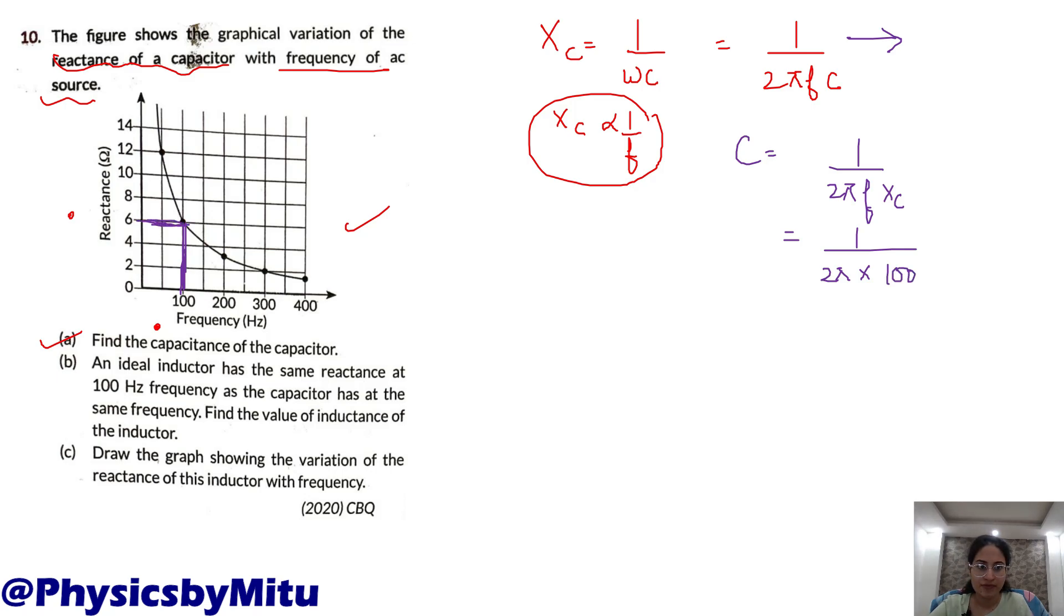So, 100 into 6. Solving this, you get 265 into 10 raised to per minus 6 farad, which is 265 microfarad.